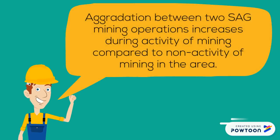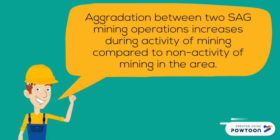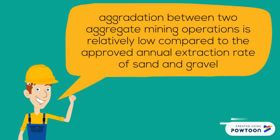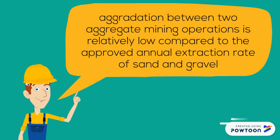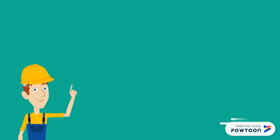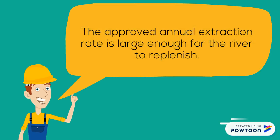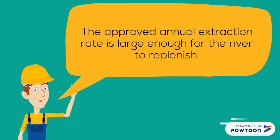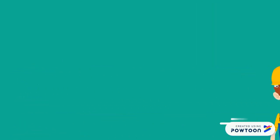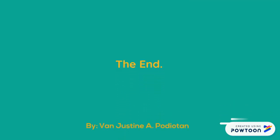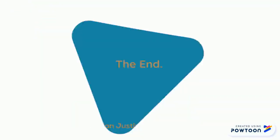Aggradation between two sag mining operations increases during activity of mining compared to non-activity of mining in the area. However, it was found out that the aggradation between two aggregate mining operations is relatively low compared to the approved annual extraction rate of sand and gravel. The approved annual extraction rate is large enough for the river to replenish.